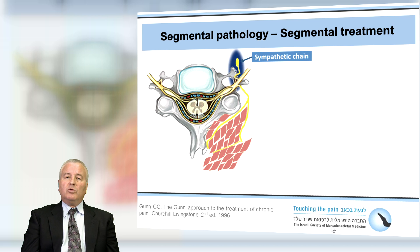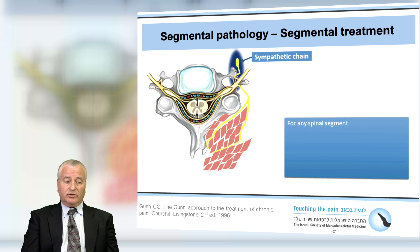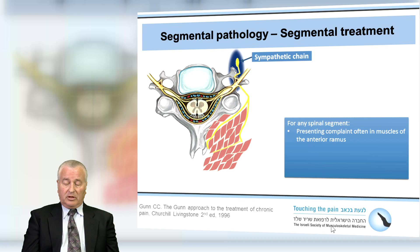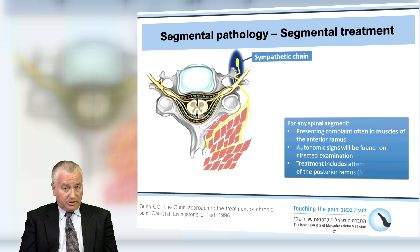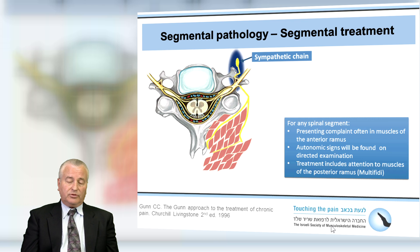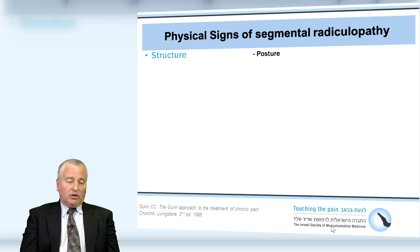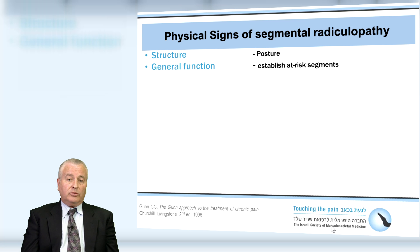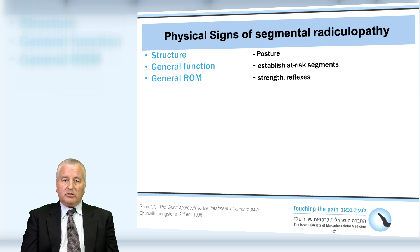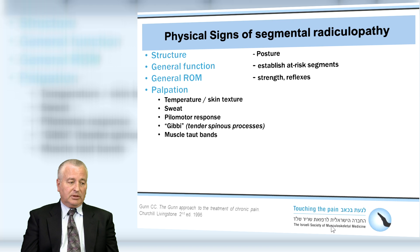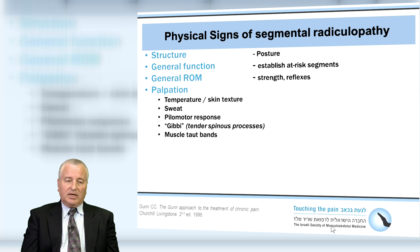The sympathetic chain is going to give us more signs in the periphery of a segmental problem, and that is essential in Gunn's model of diagnosis. For any spinal segment, the problem will present with difficulty often from muscles innervated by the anterior primary ramus. But we find autonomic changes on our physical examination, and as part of our treatment, we'll treat muscles of the posterior primary ramus as well. The signs of a radiculopathy will be the signs of our physical examination. As we palpate and observe, we'll also see autonomic segmental signs, and we'll go through these signs in a future lecture as evidence of a segmental problem.